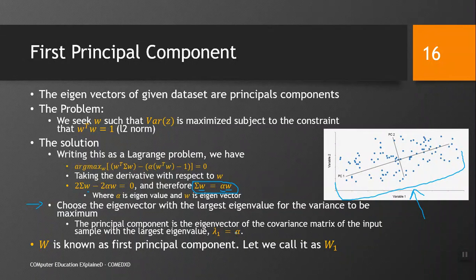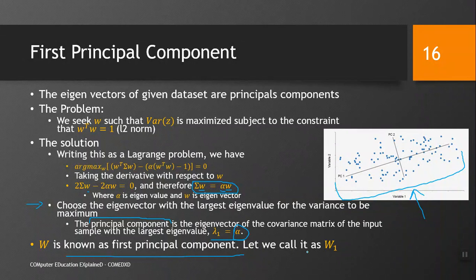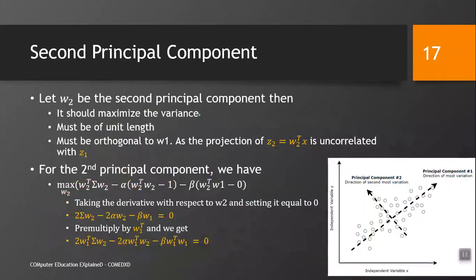We choose the eigenvector with the largest eigenvalue for the variance to be maximum, because we want the maximum view of our data. The principal component is the eigenvector of the covariance matrix with the largest eigenvalue lambda1 — the first principal component. We may have multiple principal components: the next maximum eigenvalue corresponds to the second best principal component, and so on.